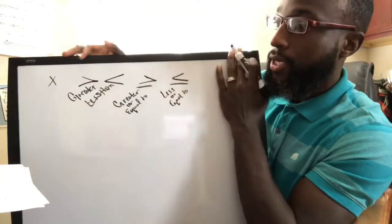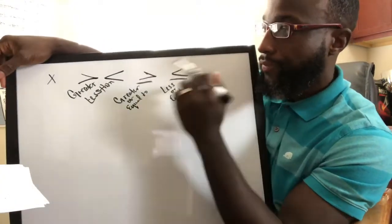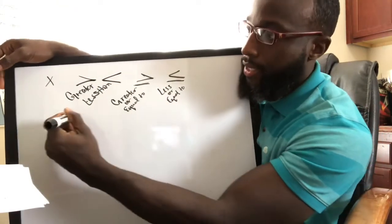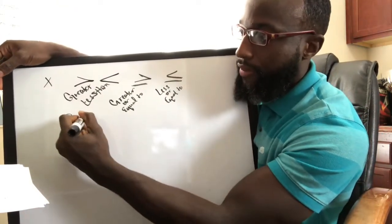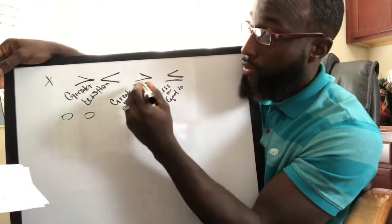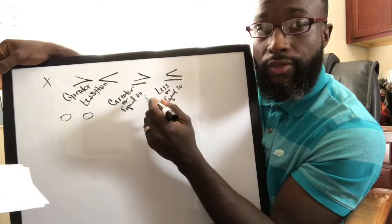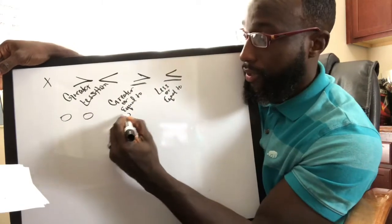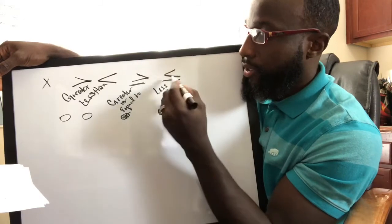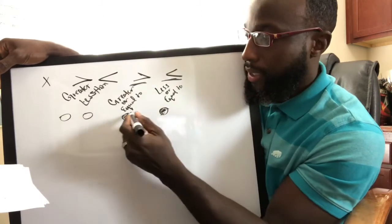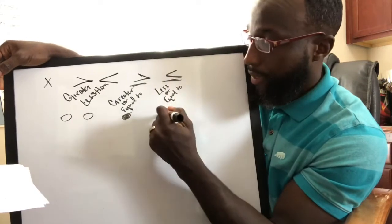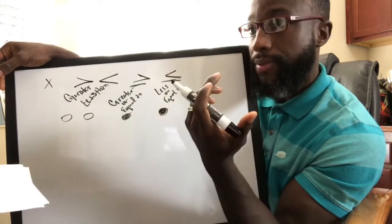Now, when you think about graphing them on a number line — greater than and less than don't have the equal sign, so whenever you graph them it's going to be an open circle. When you graph greater than or equal to, or less than or equal to, it's going to be a closed circle. The closed circle represents the fact that the solution could be that number.